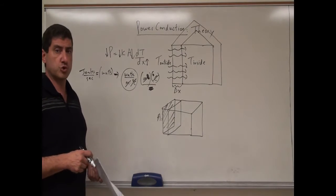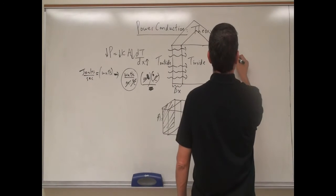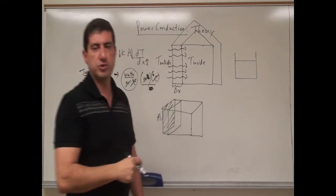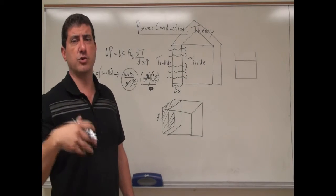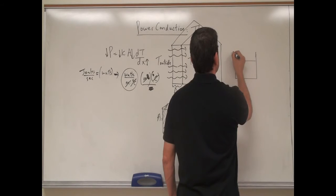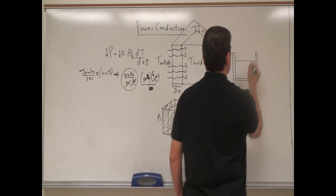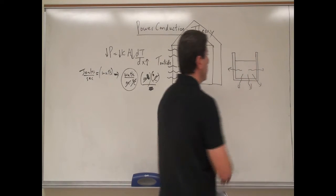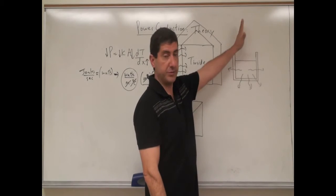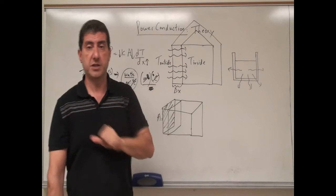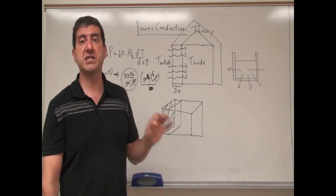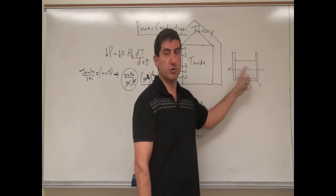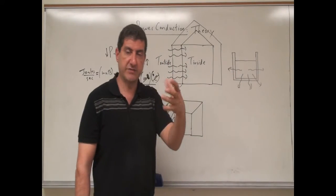This applies not just to houses but to any material losing heat — it could be a cup of hot soup or coffee. The cup has a certain thickness and the material loses heat through the walls of the cup on all sides. Of course it also radiates heat through the top, which follows the radiation equation P = AσET⁴, covered in previous videos. This conduction equation applies to heat conducted through the walls of the material.